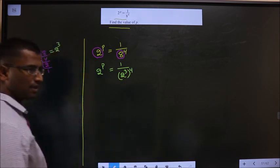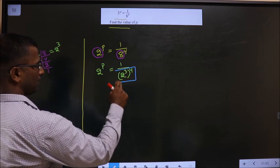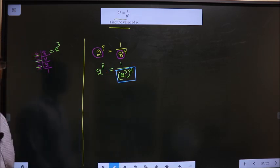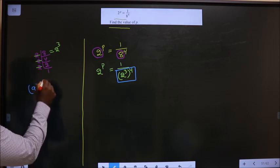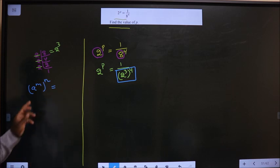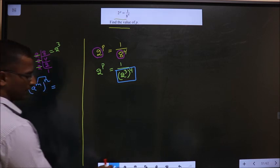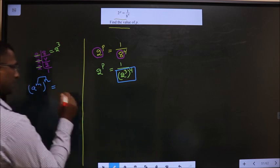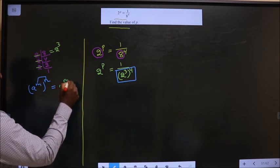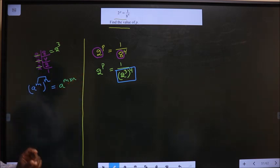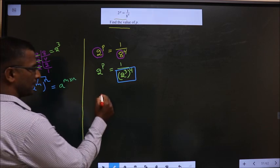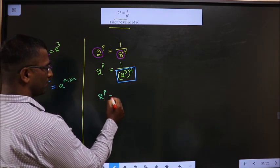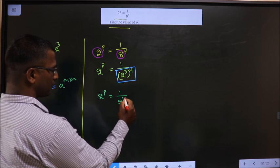Now, what formula will you apply onto this one? The formula is a power m power n. A has got more than 1 power, that is multiple powers. In that case, multiply the powers. One base has got multiple powers, so the result is multiply the powers. So here also the same thing. So 2 power p equal to 1 by 2 power 3 into 4 is 12.